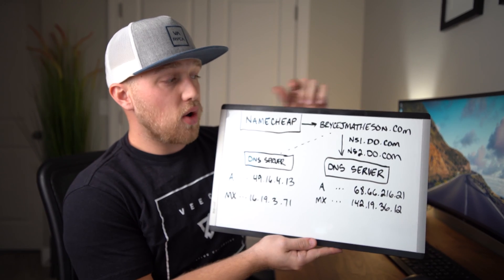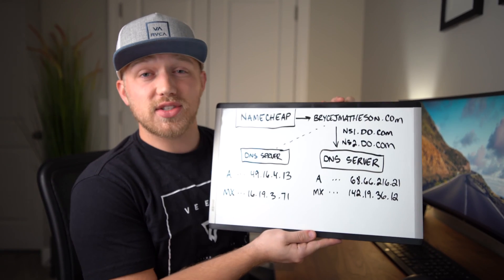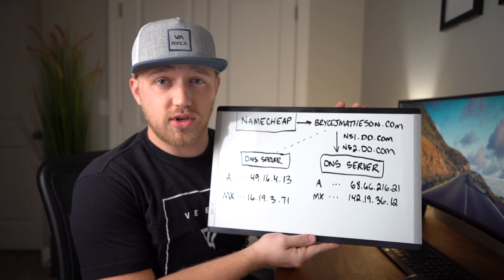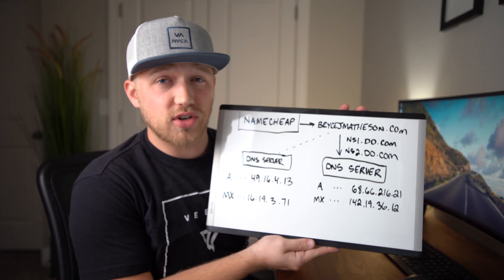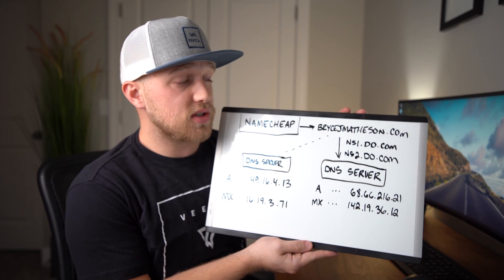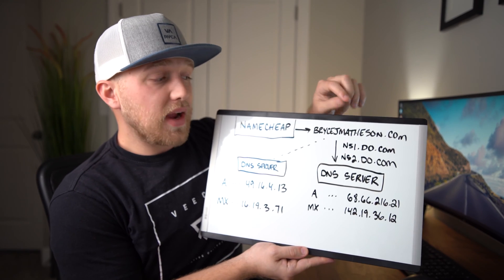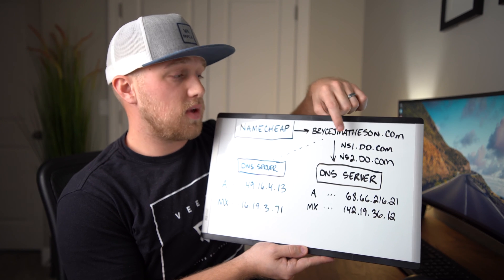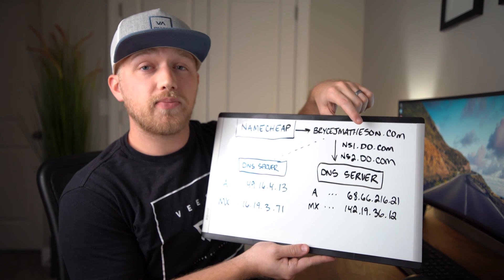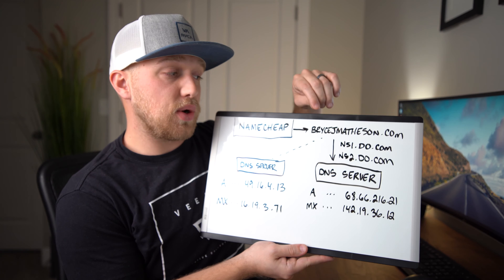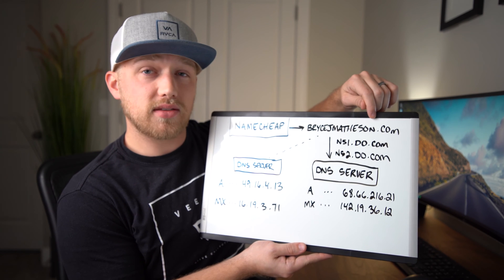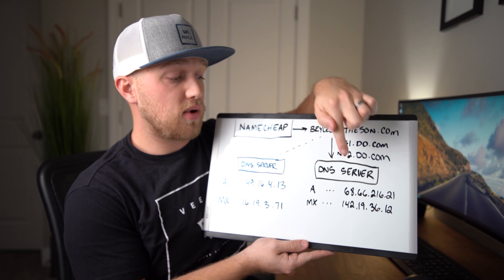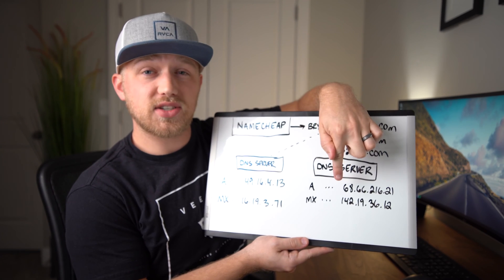Once I own this domain, there's a setting under my domain settings where I can choose what my name servers are. The name servers are just who owns the DNS records. So my name servers are ns1.do.com and ns2.do.com. This tells the computer that when I go to BryceJMatheson.com, I need to go to this server to look up where my DNS records are.